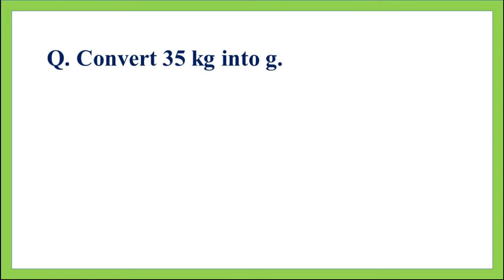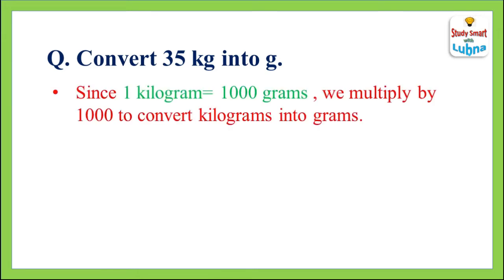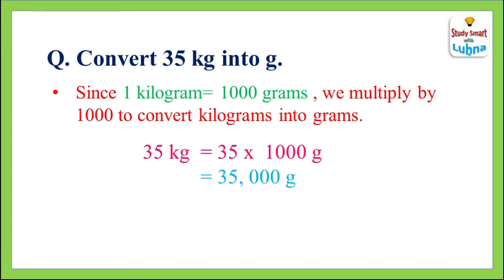In this question we have to convert 35 kilograms into grams. Since 1 kilogram is equal to 1,000 grams, we multiply by 1,000 to convert kilograms into grams. So we will multiply 35 by 1,000. After multiplying, we will get 35,000 grams. So 35 kilograms is equal to 35,000 grams.